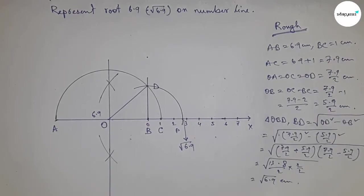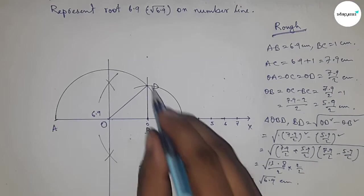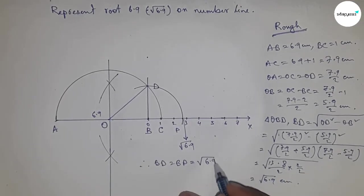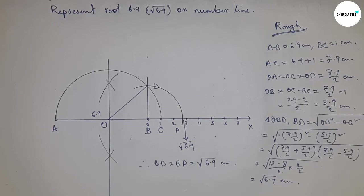Therefore, distance BD and BP are equal to root 6.9 centimeters. That's all.